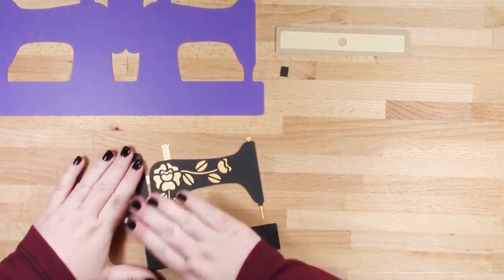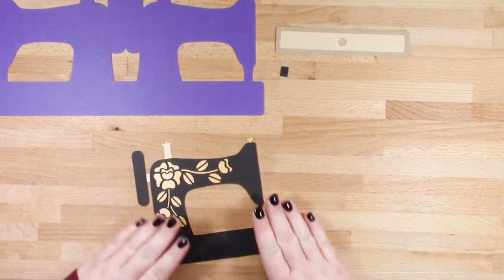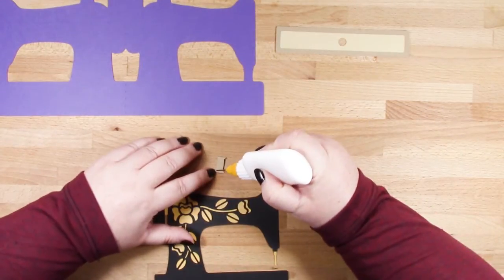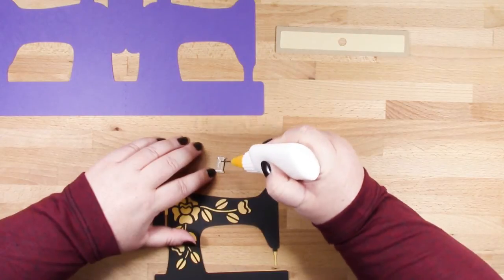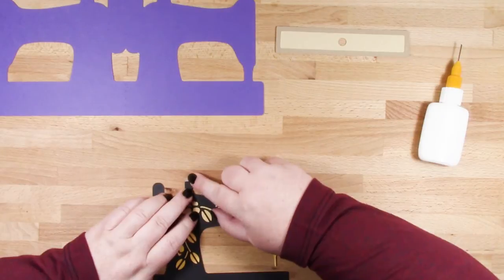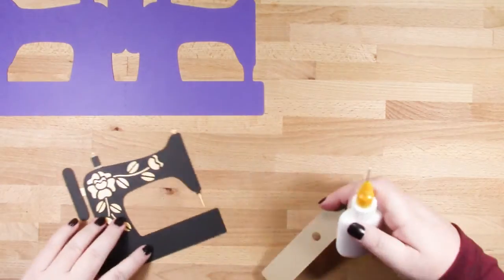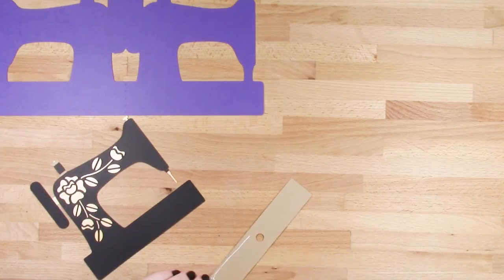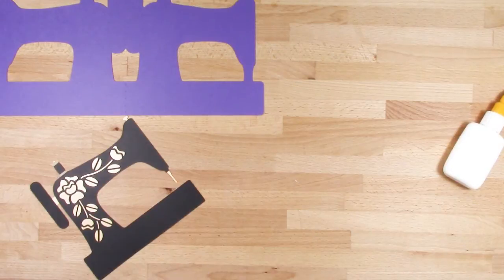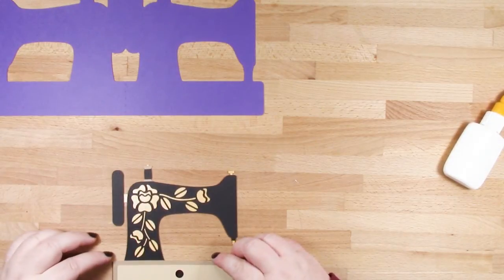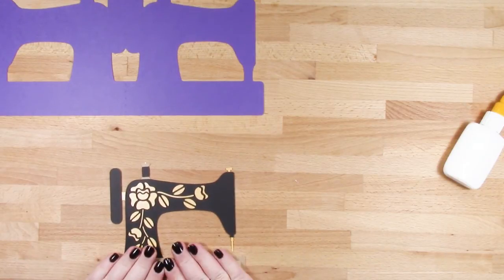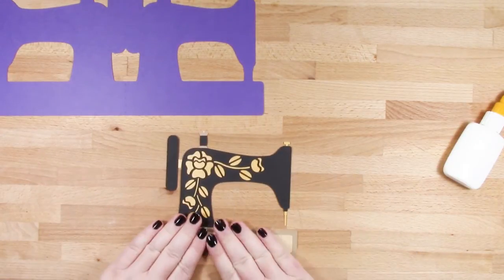Using wet glue gives you that little bit of wiggle time to get it just into place. Now I can add on my little cotton reel and I can add on my drawer front. In my sample card I popped an enamel dot into that hole to look like a drawer handle.